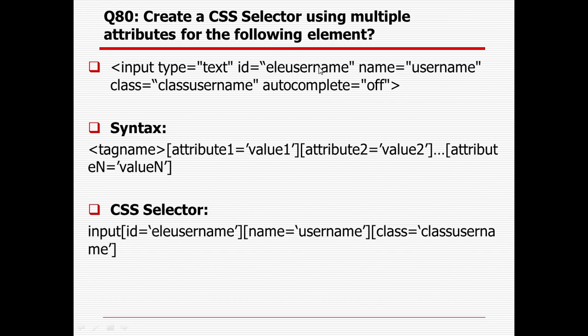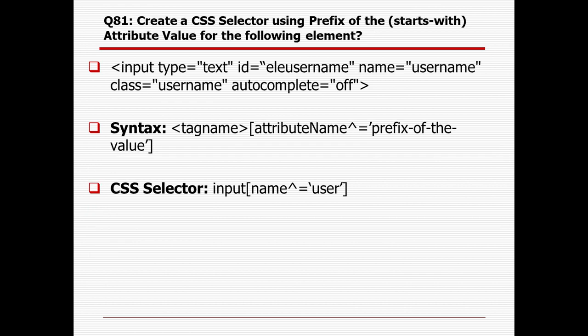How to create a CSS selector using multiple attributes: syntax is tag name, then [attribute1='value1'][attribute2='value2'][attributeN='valueN']. Here, tag name is 'input', attribute is 'id' with value 'element_username', attribute is 'name' with value 'username', attribute is 'class' with value 'class_username'. In case one particular attribute cannot uniquely identify an element, use multiple attributes. Sometimes one attribute can fail, but the element can still be identified if other attributes match.